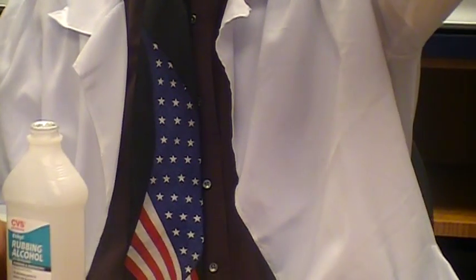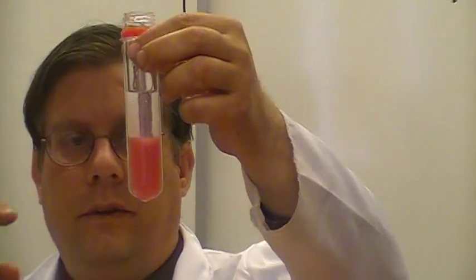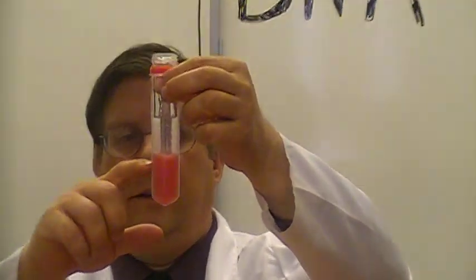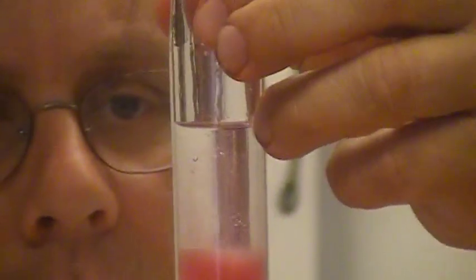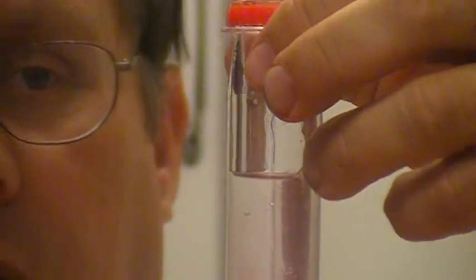So, now you have two layers, a layer of a strawberry lysis solution and a layer of alcohol. And what should start happening in a minute is you should see little cobwebs or little stringy gauze-like substances starting to form and that's the DNA. So, we'll keep a look on that.